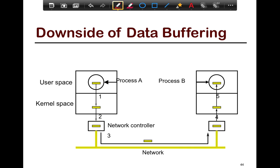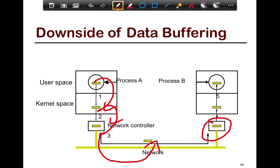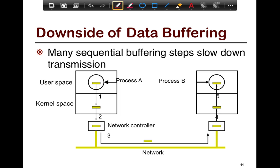Data buffering, although good for latency purposes, is not always good because it slows down things in the critical path. In a typical system, process A copies from user to kernel space, then kernel to the network; the network introduces latency by buffering and batching; then the network buffers, the NIC on the other side buffers, which transfers to the kernel, and then to the user. There are five to six buffer copies happening in the system, each introducing its own latency delay. With many sequential buffering stages, each one adds delay on the critical path.